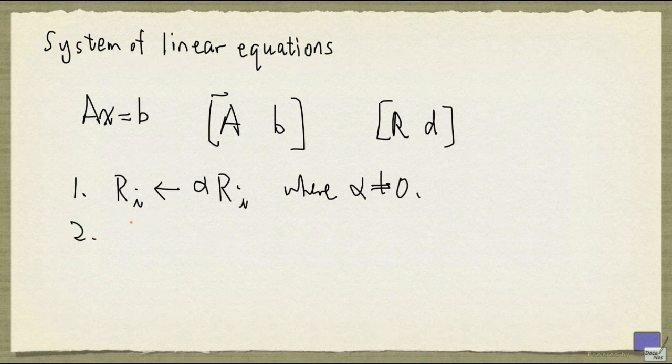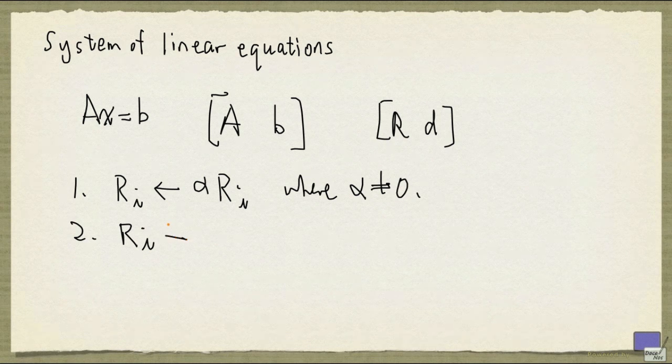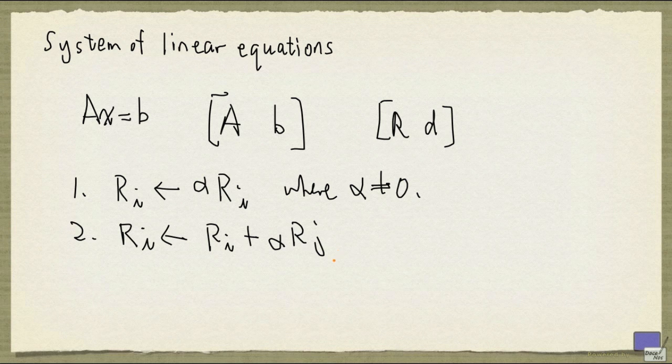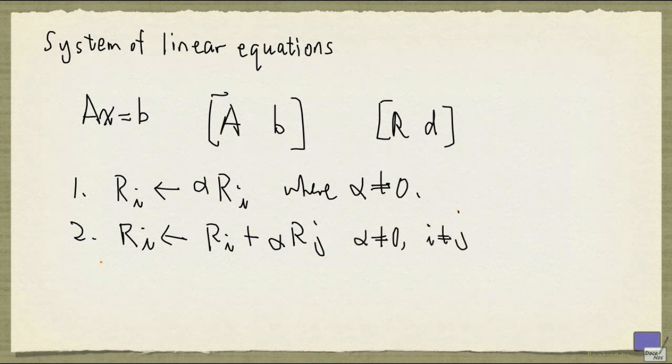The second operation is you can replace row i with a non-zero multiple of row j, where j is not the same as i, added to row i. And the third operation is we can exchange row i and row j, where i is not equal to j.